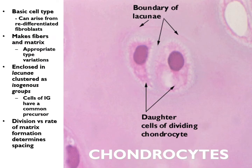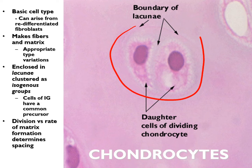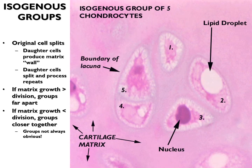Looking at the slide, we can see one lacuna with two cells inside it. The space around the cell is an artifact, not a true space. In another area we can identify an isogenous group with one, two, three, four, and five cells in the same lacuna.